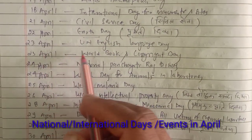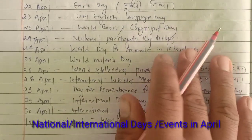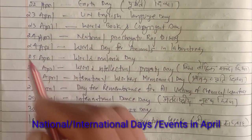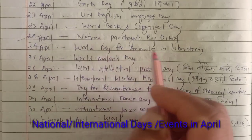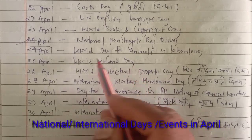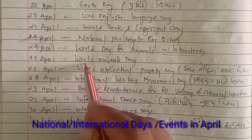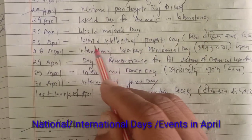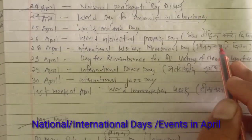23rd April is UN English Language Day, and also World Book and Copyright Day. 24th April is National Panchayati Raj Divas — also a key important day. 24th April is also World Day for Animals in Laboratories. 25th April is World Malaria Day. 26th April is World Intellectual Property Day, known as Vishwa Baudik Sampata Divas.